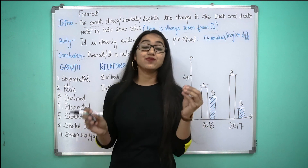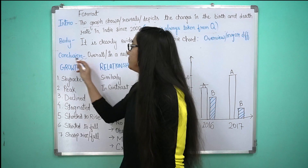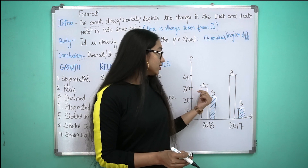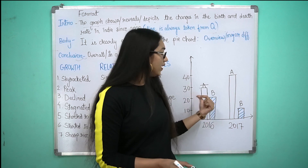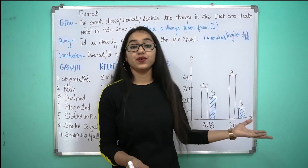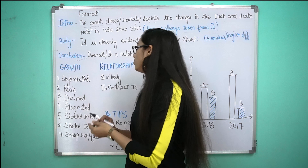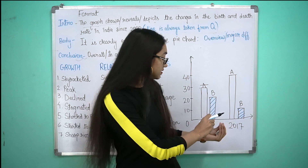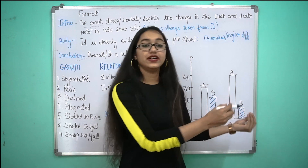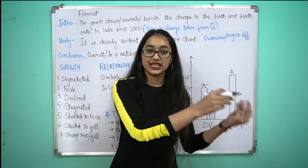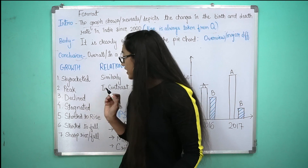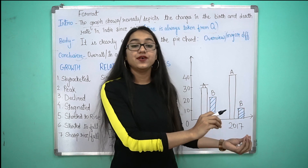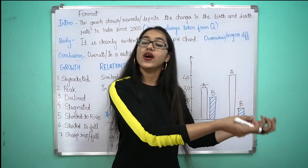अब कुछ words हैं जो हमको compulsorily use करने हैं हमारे paragraph के लिए ताकि हम उसको और attractive बना सकें। सबसे पहले जब भी हम growth की बात करेंगे — जैसे product A 30,000 पे था और अब 40,000 पे हो गया — तो हम लिख सकते हैं: 'The growth of product A skyrocketed from 2016 to 2017 by so-and-so units or percentage.' Similarly B की growth decline हो रही है, तो: 'The growth of B declined by so-and-so percent or units.'